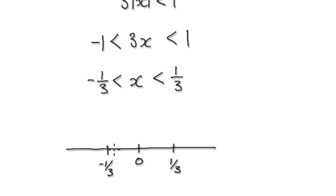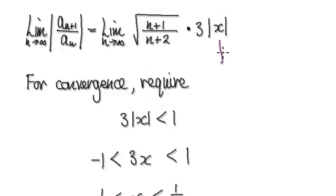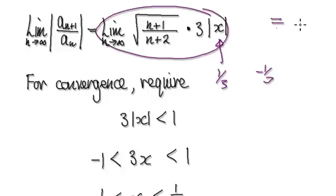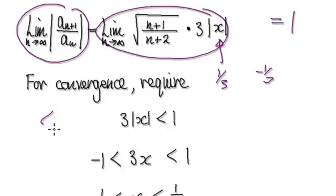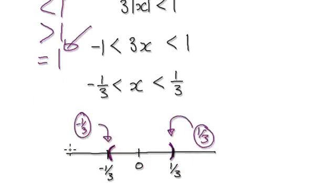But anything strictly greater than negative 1/3 will converge, and strictly less than 1/3 will converge. But remember, we need to consider what happens dead on 1/3 and dead on negative 1/3. Because if you put 1/3 or negative 1/3 into here, this whole thing will equal 1, which is inconclusive for the ratio test. So we need to manually check what happens at the endpoints negative 1/3 and positive 1/3, which we will do in the next video.